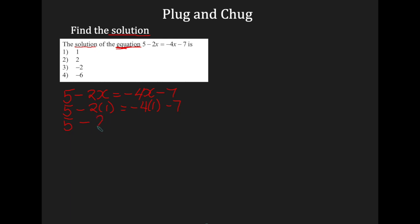I'm now going to chug using order of operations. I have subtraction and multiplication, so multiplication is first, and then the subtraction gives me 3. Moving to the right-hand side: negative 4 times 1 is negative 4, and I'm going to subtract 7. I can tell it will not equal 3, because negative 4 minus 7 gives me negative 11, not a positive. So my answer is not 1.